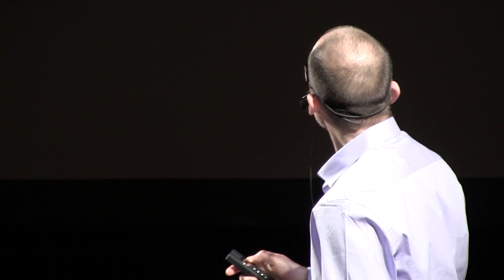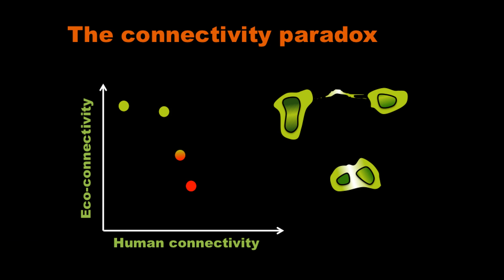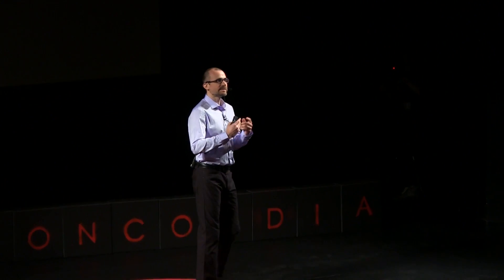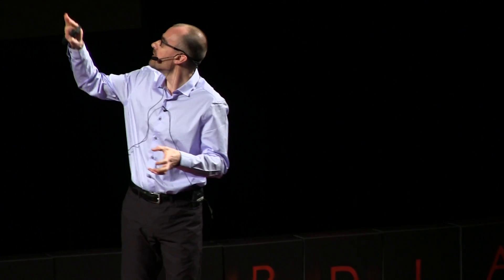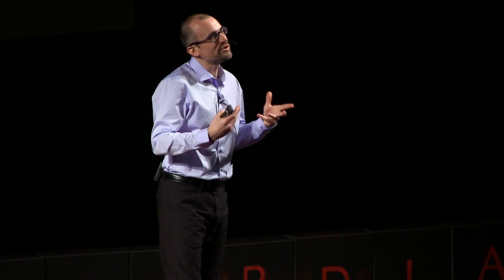We need human connectivity — it defines our society. But we also need ecological connectivity because it's what makes the biosphere resilient. This connectivity paradox is made up of a threshold — we call it a tipping point — when sudden events happen. When we pass through a threshold of human connectivity, we see the collapse of ecological connectivity. This non-linear shape makes it difficult to predict when we've gone too far, and we have to be able to predict that so we can better manage and restore our ecological connectivity for our well-being.